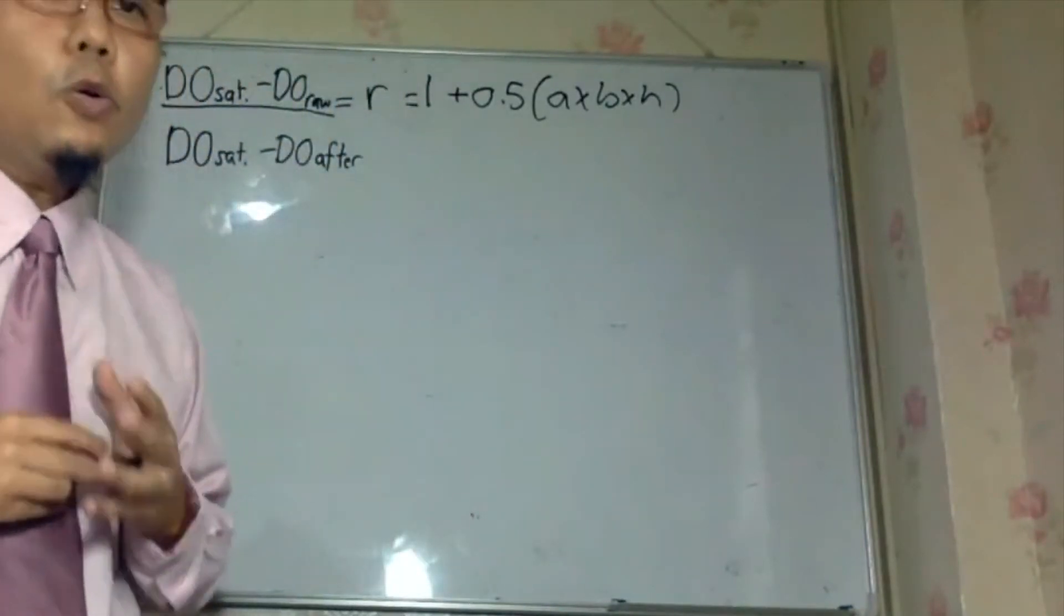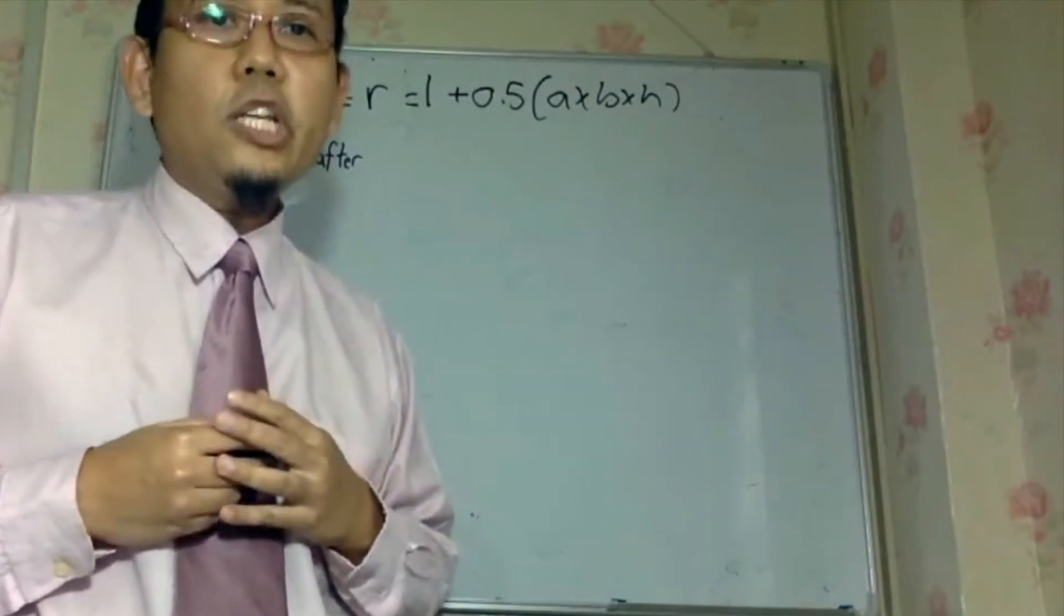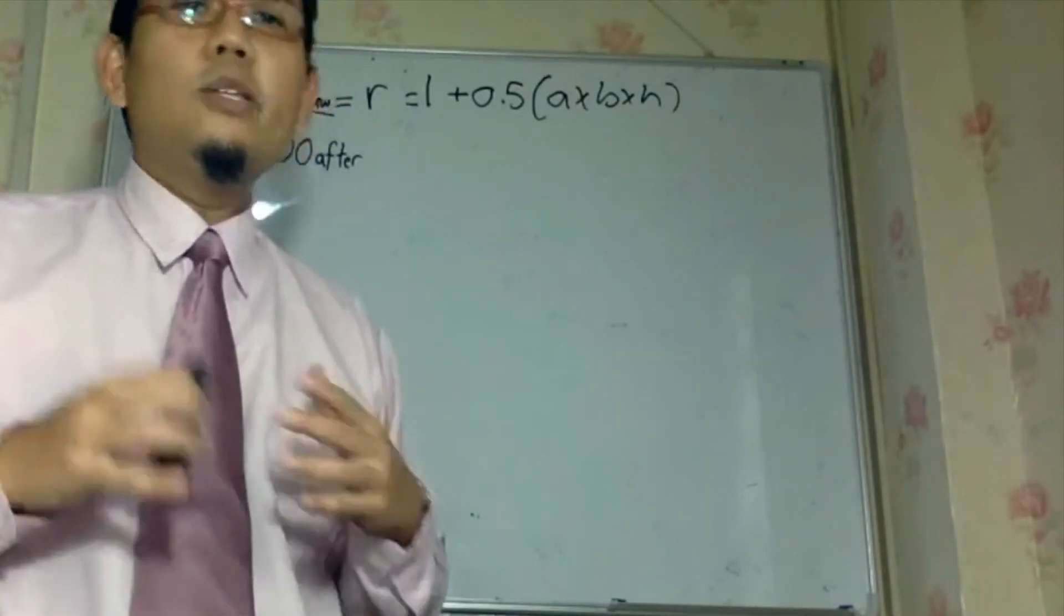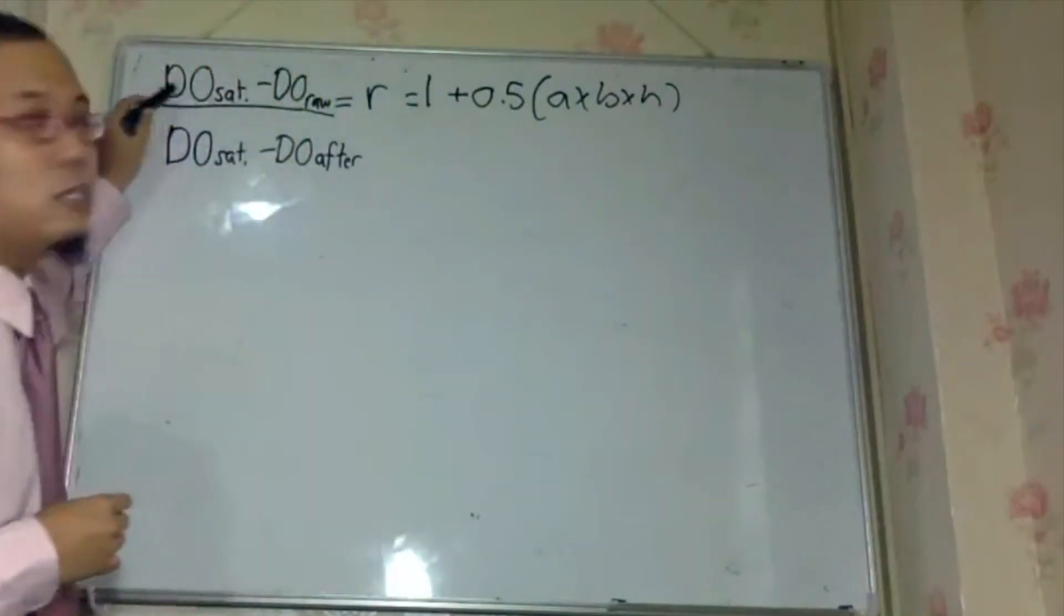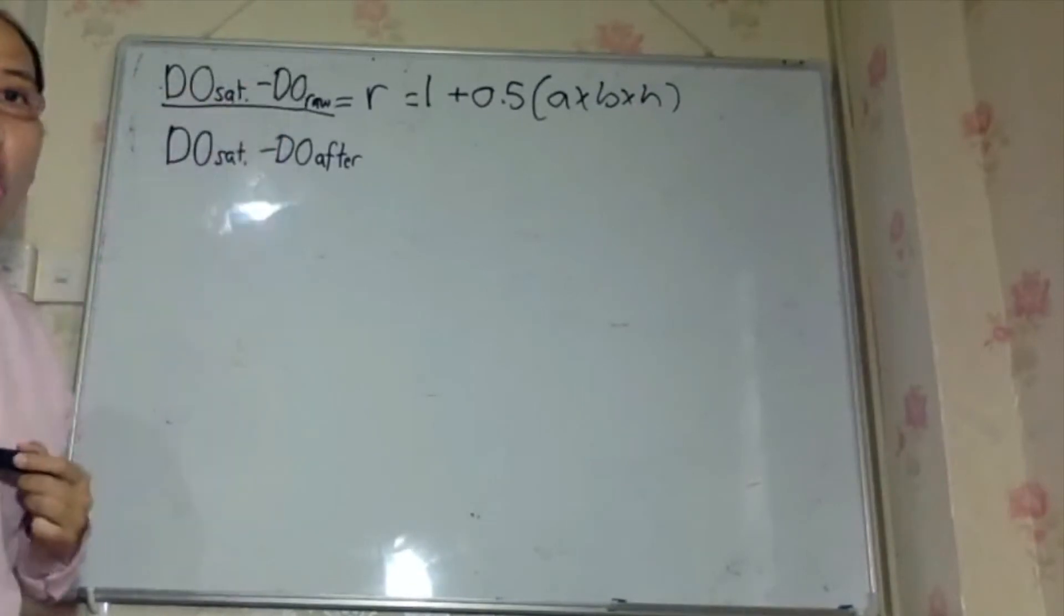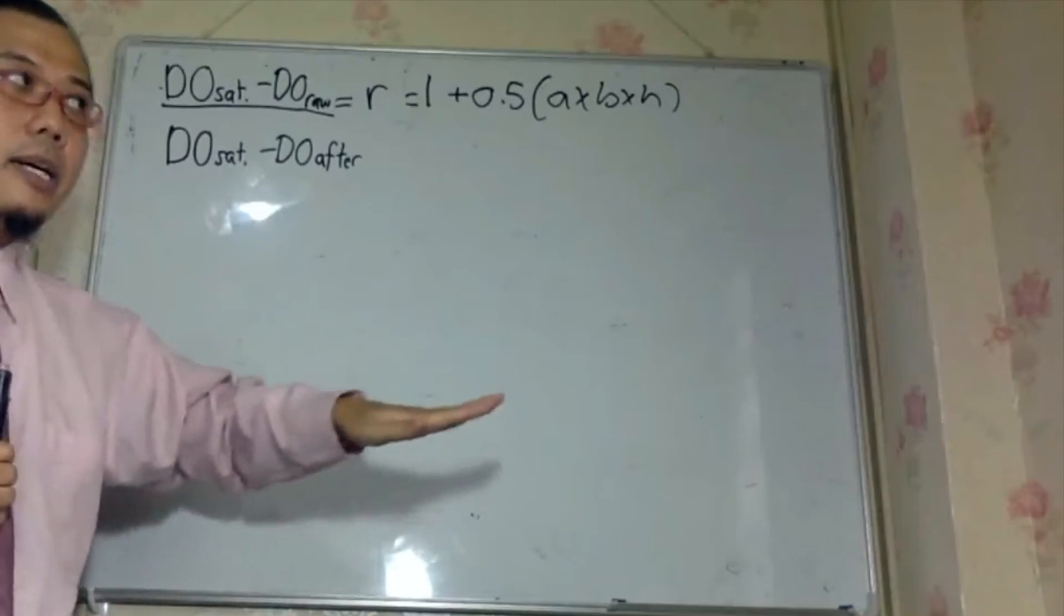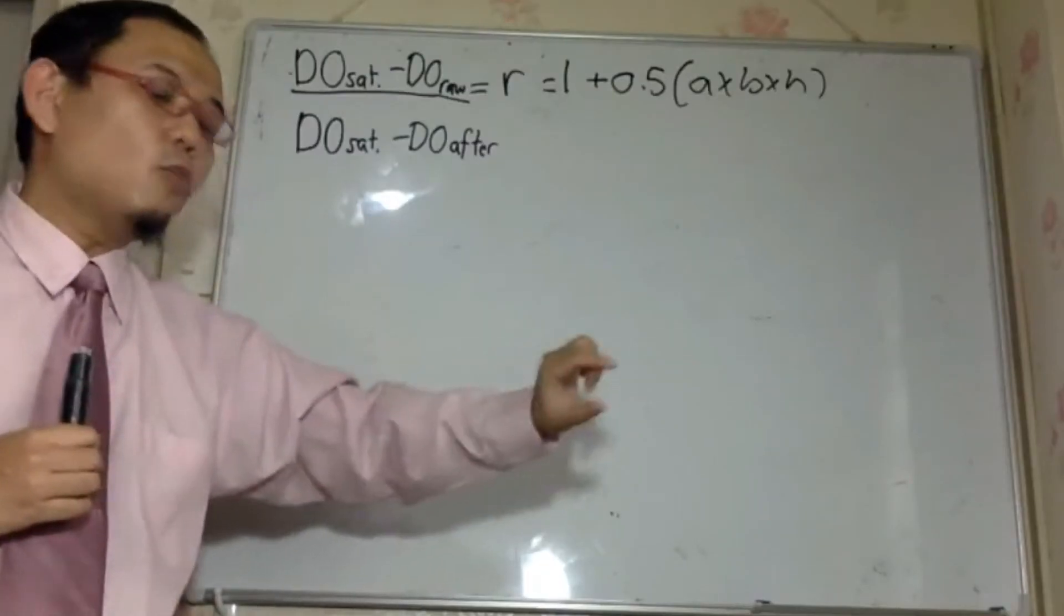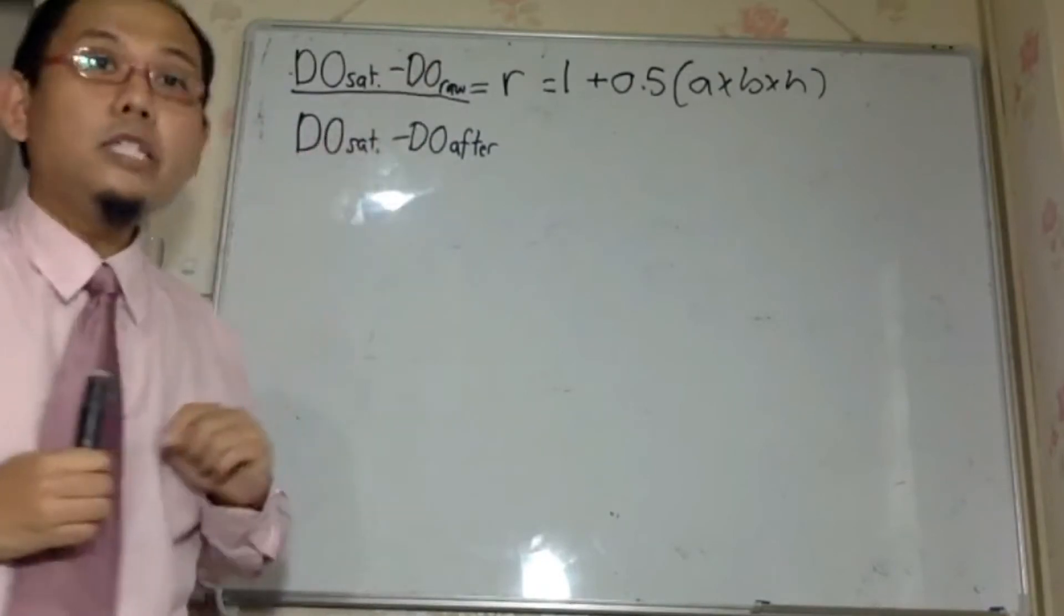Then that is the maximum value of oxygen can be inserted into the water. Basically the DO saturation, or in other words what I am trying to say, the DO saturation in water is not that high, it is probably between 8 to 9 milligram per liter. So that what remains by DO saturation. Minus DO raw.